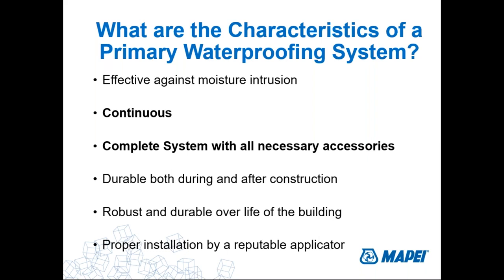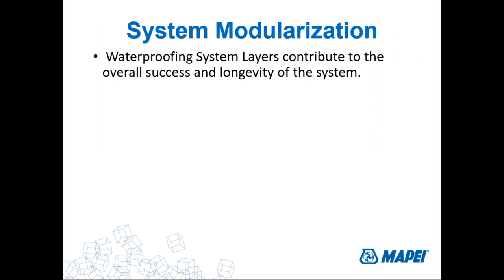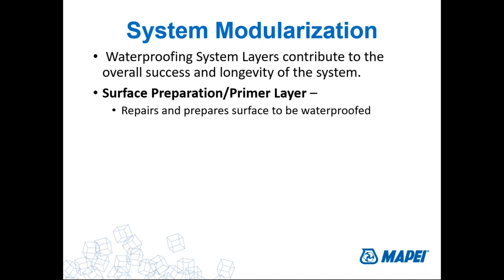There's a concept in building science called system modularization — maybe 20 to 30 years old. The concept is that any system contains layers and each layer contributes to the longevity and long functioning of the system. In waterproofing, we break it down into three layers. First is the surface prep and primer layer — some waterproofing membranes require primer. The function here is to repair and prepare the surface so that we have a smooth surface without too many bug holes or other defects.